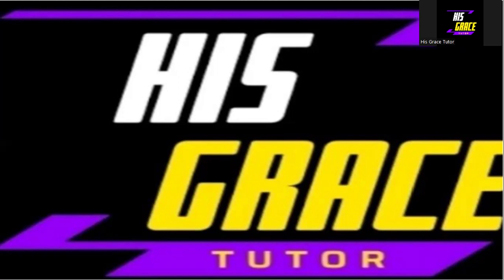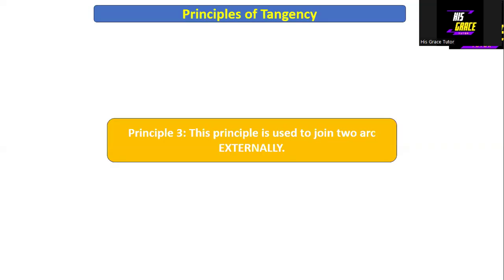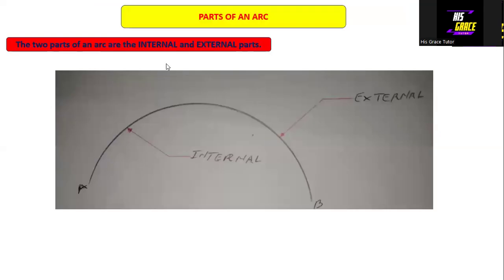We are still working on principles of tangency. We have already looked at Principle One and Principle Two, and here I'm giving information on how to solve any problem that involves the use of the principles of tangency. Now let's look at Principle Three, which is used to join two arcs externally. We use Principle Three to join two arcs externally.